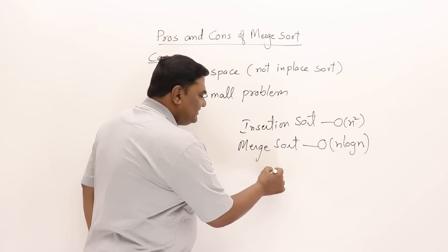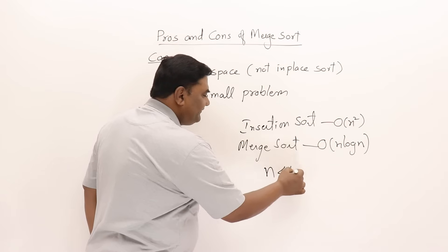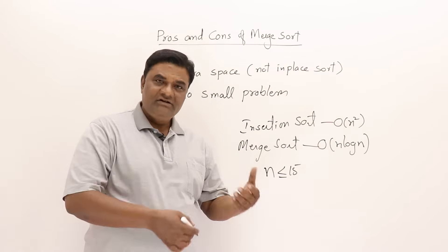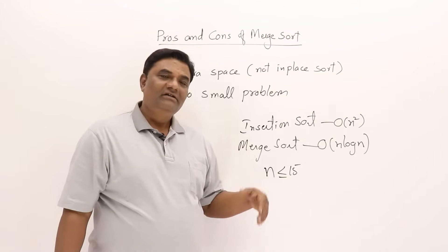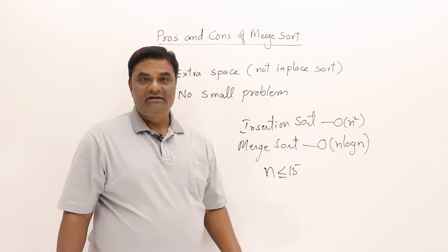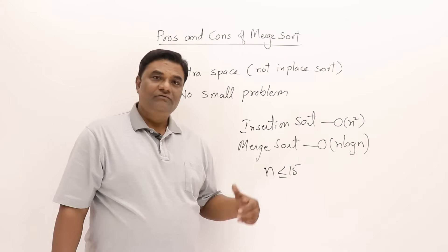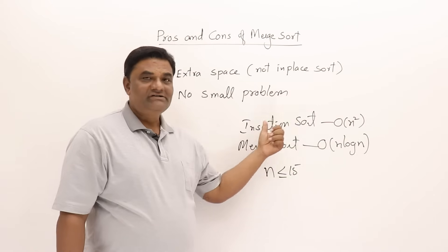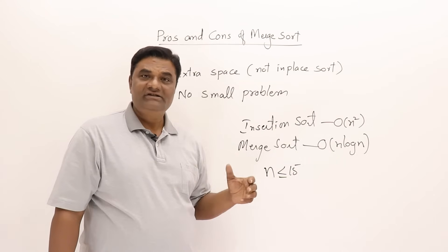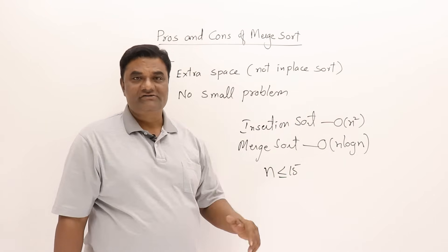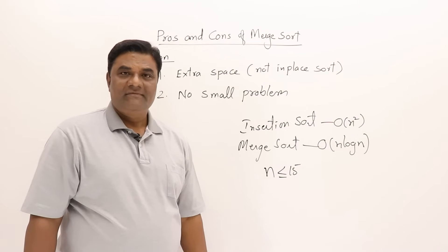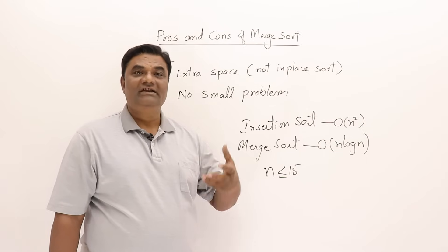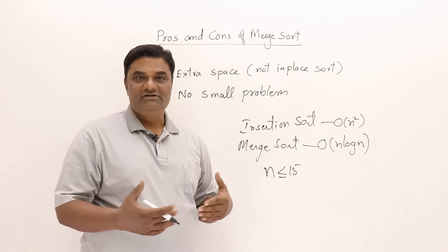It is observed that for lists with 15 or fewer elements, merge sort is slower than insertion sort. Beyond that, merge sort becomes better. So for small sub-problems, we use insertion sort as part of merge sort. Merge sort handles the large problems, takes the help of insertion sort for small ones, and then merges the results.